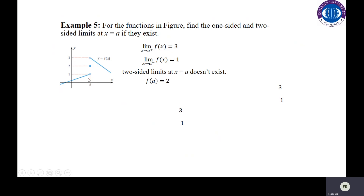If you talk about the left-hand limit, when you approach a from the left-hand side, then the function value is 1. So the left-hand limit of this function is 1. Now, does the two-sided limit exist? No, because the one-sided limits are not equal. If you look at the function's value at that point, the function's value is 2.